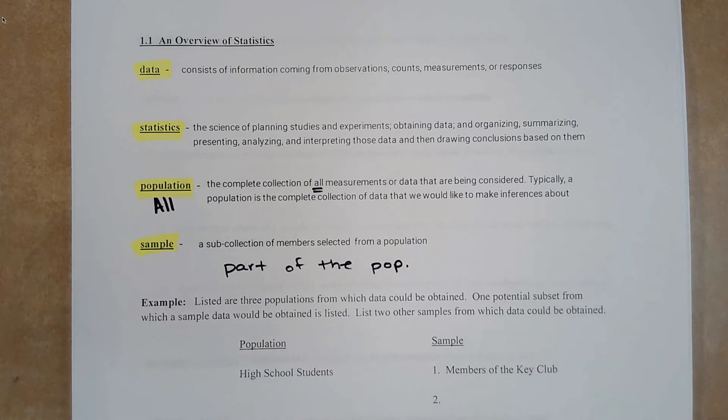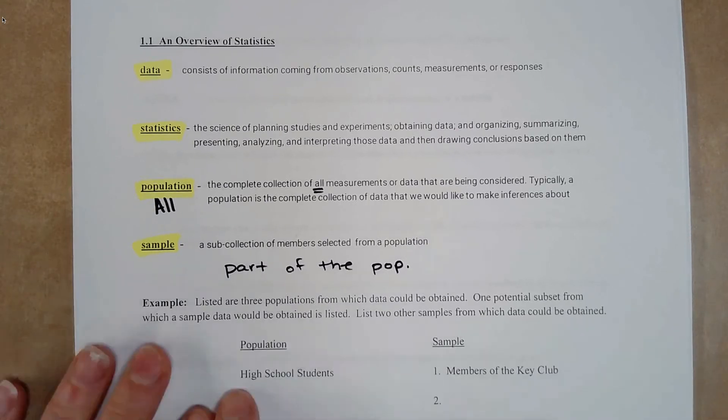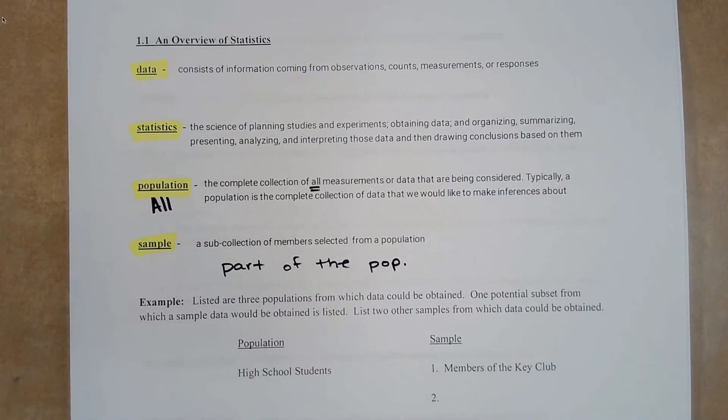From these examples, we are going to determine some other samples. Listed are three populations which data can be obtained. One potential subset from which sample data would be obtained is listed. List two other samples from which data could be obtained. So we're going to say our population is high school students.